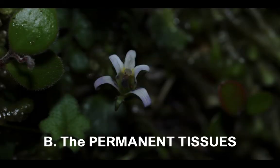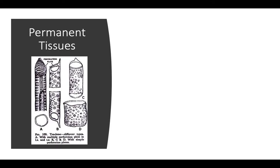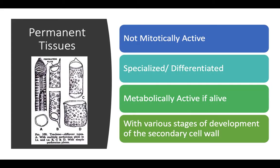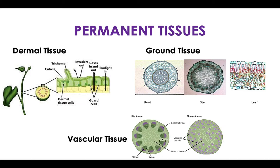Comparing permanent tissue to meristematic tissue: permanent tissues are not mitotically active, whereas meristems are active. Permanent tissues are specialized or differentiated, versus unspecialized and undifferentiated for meristems — undifferentiated meaning the cells do not have a specific function yet. They are metabolically active, especially if alive, and characteristically have various stages of development in their cell walls, sometimes called perforations. A permanent tissue can be categorized as dermal, ground, or vascular tissue.